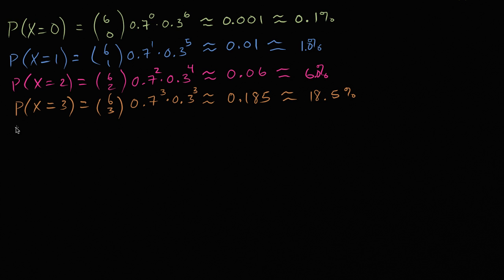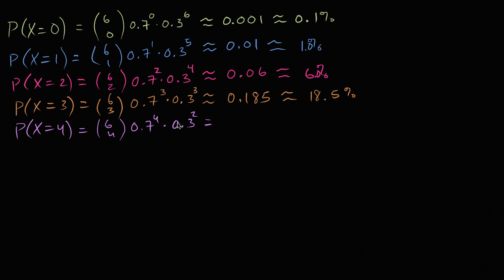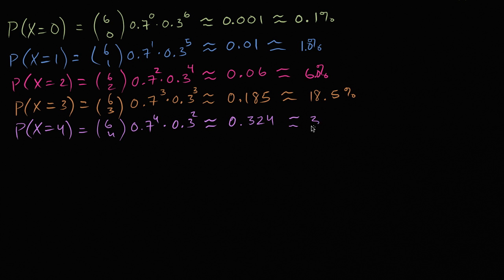Now the probability that our random variable is equal to four: this is going to be six choose four, times 0.7 to the fourth power, times 0.3 to the second power, which is approximately 0.324 — so roughly a 32.4% chance of making exactly four out of the six free throws.